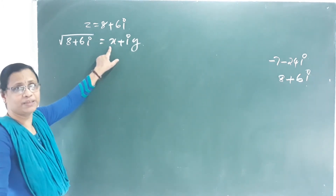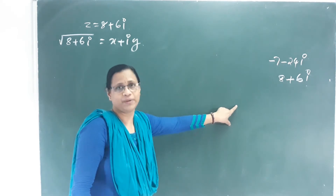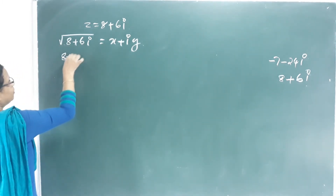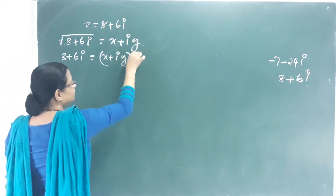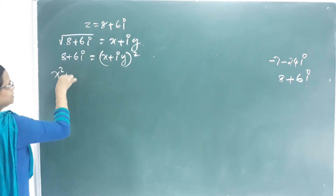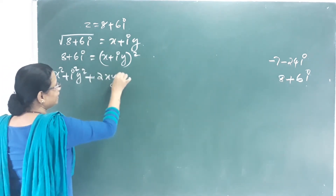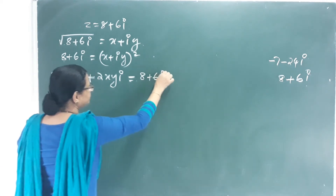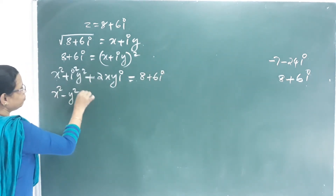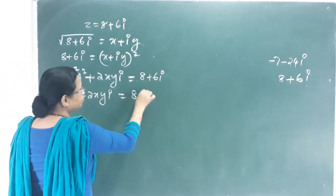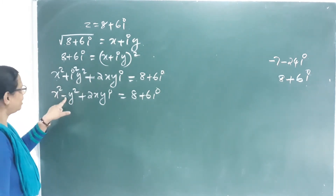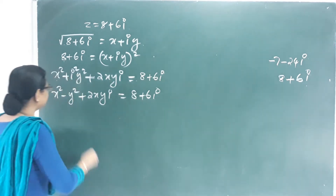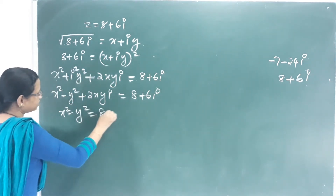Squaring both sides: (x + iy)² = x² + i²y² + 2xyi = x² − y² + 2xyi, because i² = −1. Setting this equal to 8 + 6i, we get two equations: Equation 1: x² − y² = 8, and Equation 2: 2xy = 6.